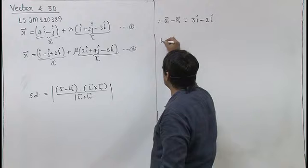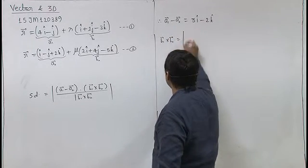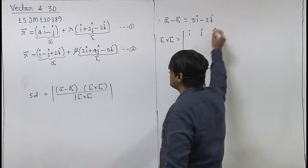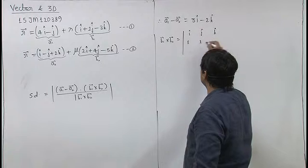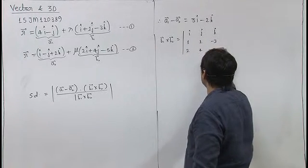b1 cross b2 will be determinant i cap j cap k cap 1, 2, minus 3. b2 is 2, 4, minus 5.